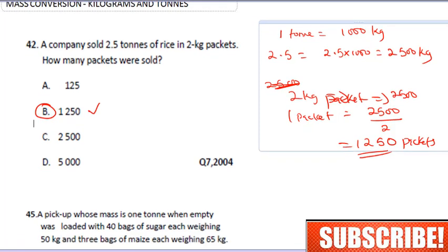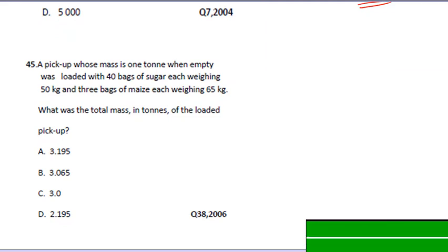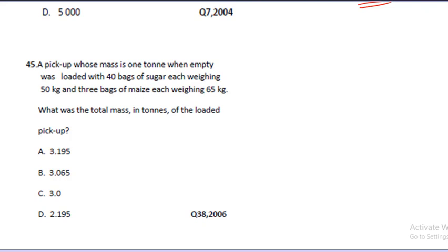The next question says a pickup whose mass is one ton when empty was loaded with 40 bags of sugar each weighing 50 kg and 3 bags of maize each weighing 65 kg. What was the total mass in tons of the loaded pickup?